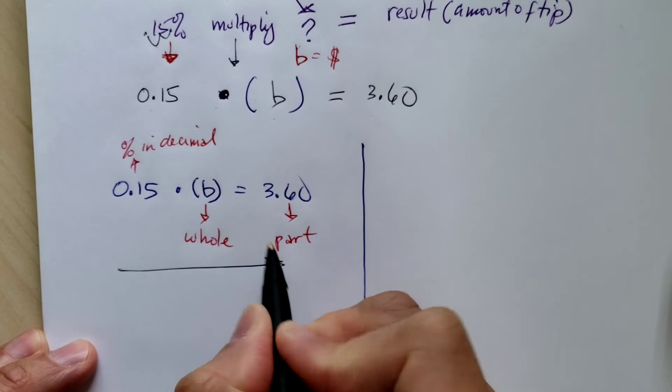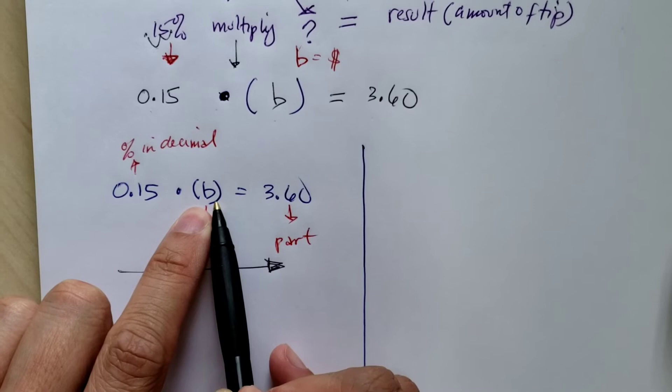So going this way, from left to right, you're multiplying. Now, we don't know what B is.